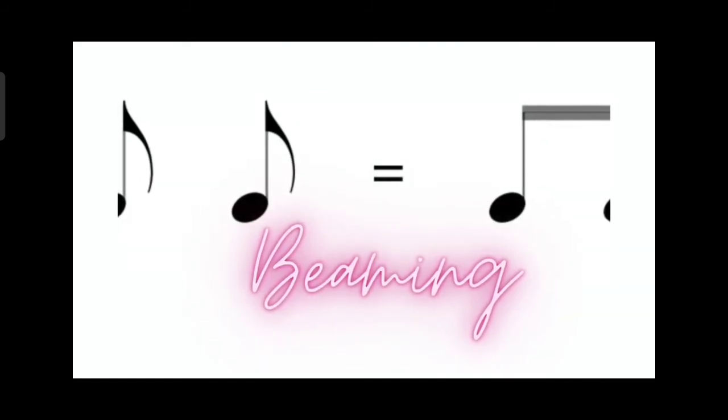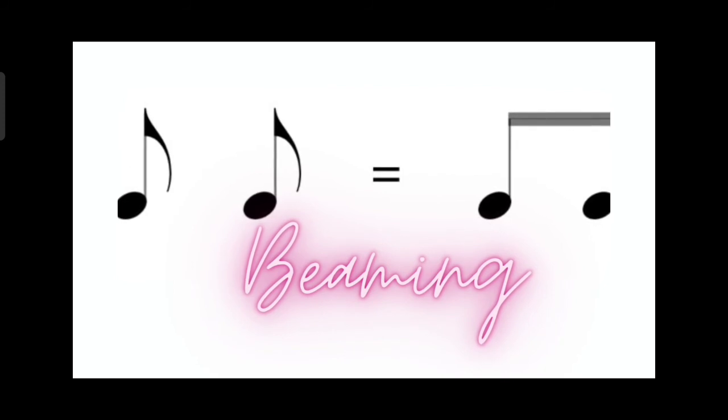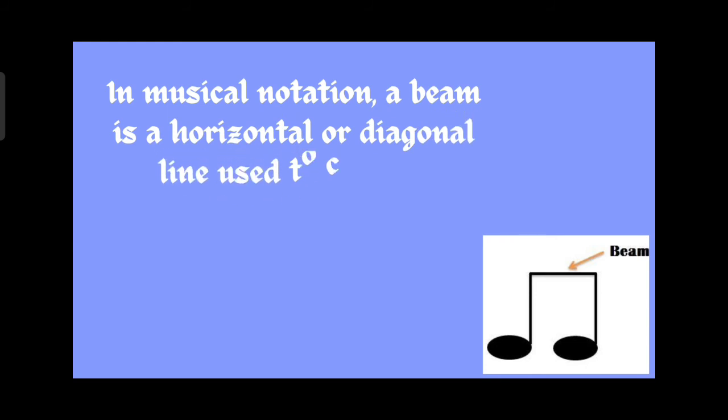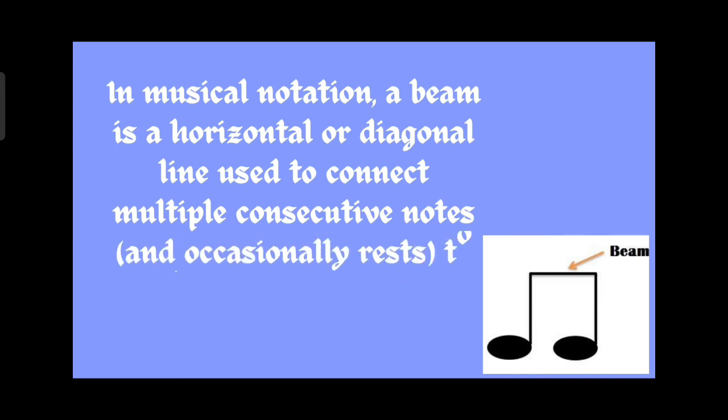Then we have what we call beaming. We only beam notes that have flags or tails, most especially quaver notes. Notes in musical notation, a beam is a horizontal or diagonal line used to connect multiple consecutive notes. Occasionally rests are included to indicate rhythmic grouping. That is the reason why we beam notes.